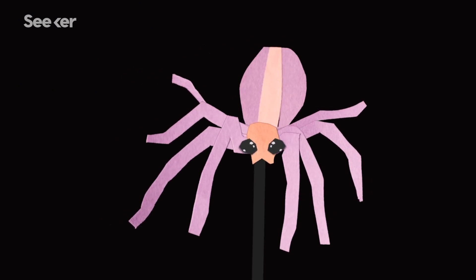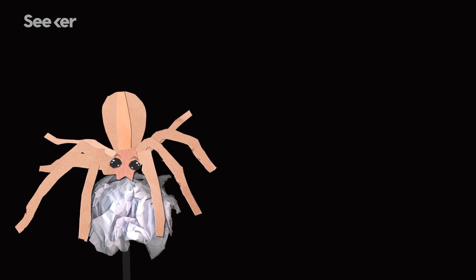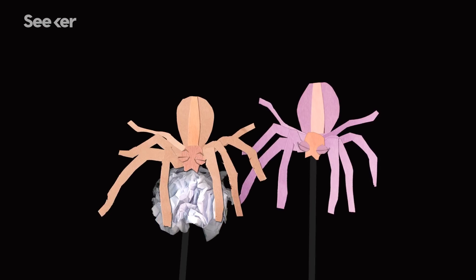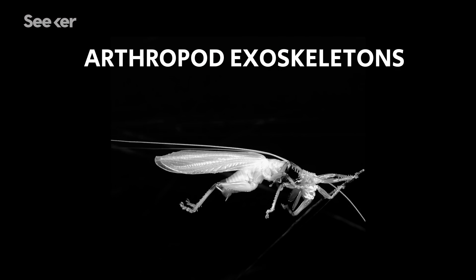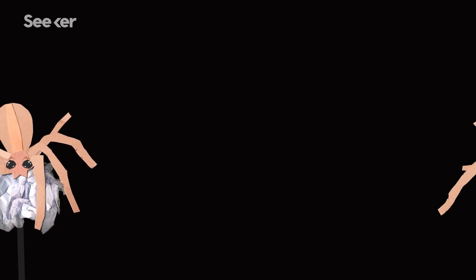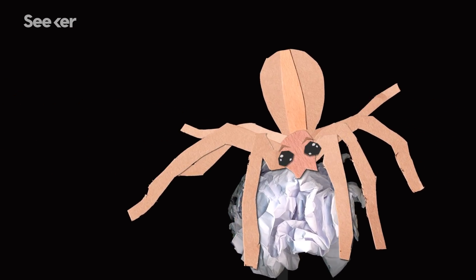Well, most of the males. About 30% of the time, male nursery web spiders provide females with dummy gifts. Pieces of garbage, arthropod exoskeletons, or plants. These are made to look like the high-quality gifts of their rivals. Basically, designer knockoffs.